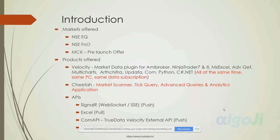If you're an application developer, connecting to Velocity immediately gives you access to a large number of existing Velocity users — those already using it for Amibroker, NinjaTrader, and Excel. Your application would be added easily without users paying anything extra. We've also launched Cheetah — similar to Iris and Falcon in the market — a market scanner application.